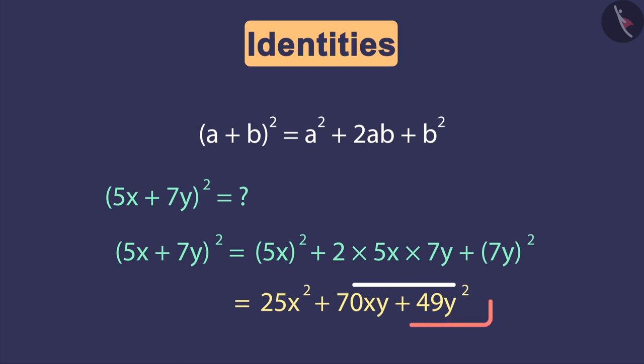This cannot be simplified further because there are no similar terms. So we have seen that we can also use this identity to find the square of an expression.